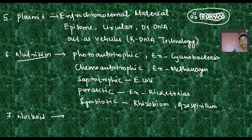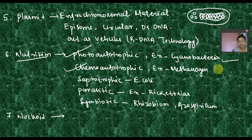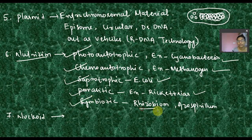We have to look at different types of nutrition: phototrophic nutrition (for example, cyanobacteria), chemotrophic nutrition (for example, methanogen), saprotrophic (for example, E. coli), parasitic (for example, Rickettsia), and symbiotic association (for example, Rhizobium or Azospirillum associated with leguminous plants for nitrogen fixation).